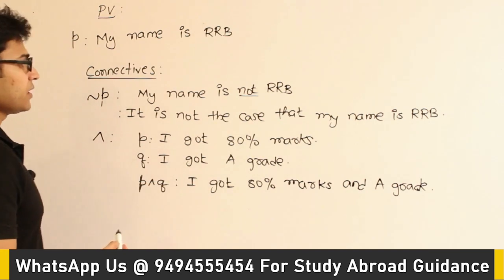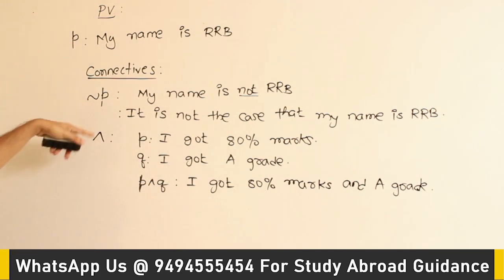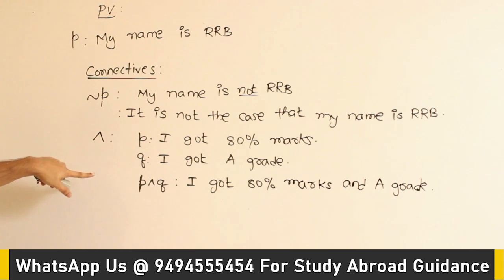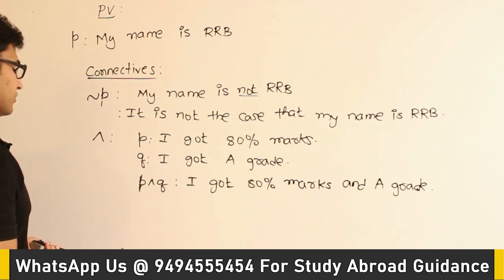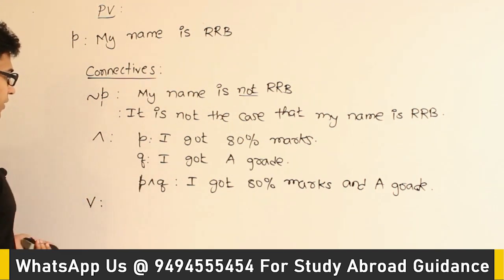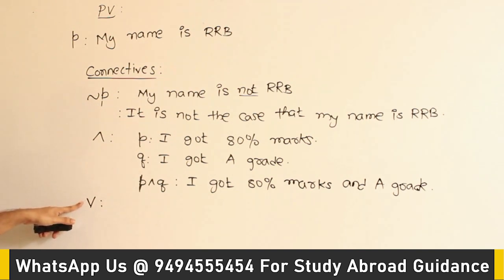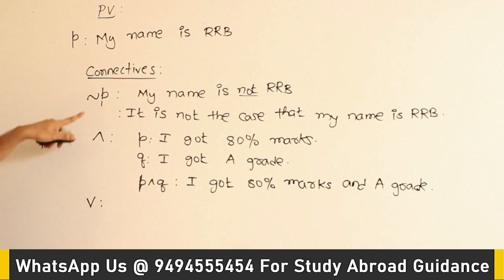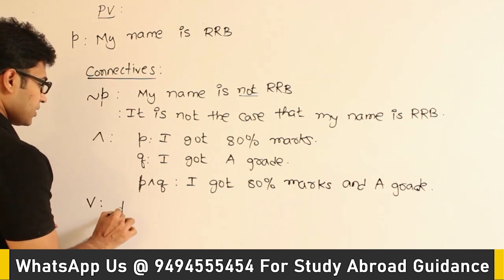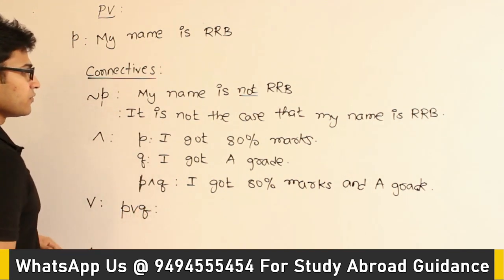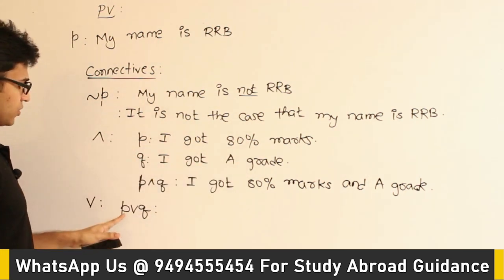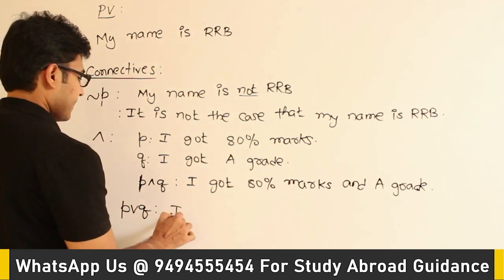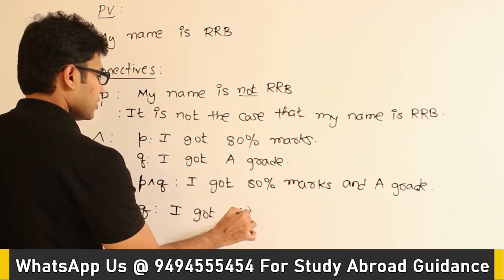Now, about truth values after using the conjunction — the truth tables are the same as we've seen in digital logic. The symbol ∧ is used for conjunction and ∨ for disjunction; ¬ is used for negation. If I write P OR Q, where P is 'I got 80% marks' and Q is 'I got a grade,' then P OR Q means 'I got 80% marks or a grade.'